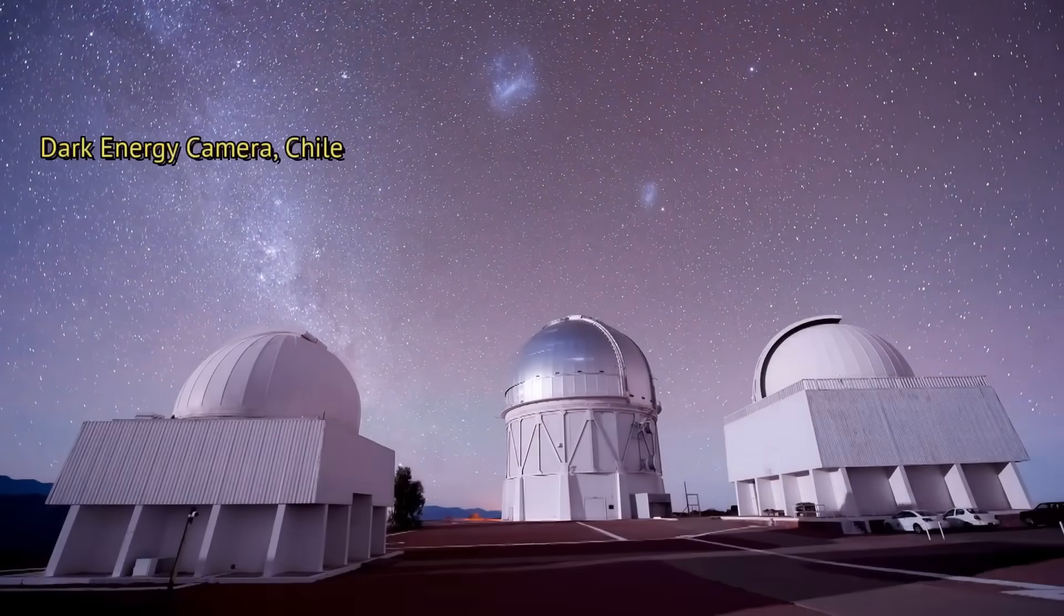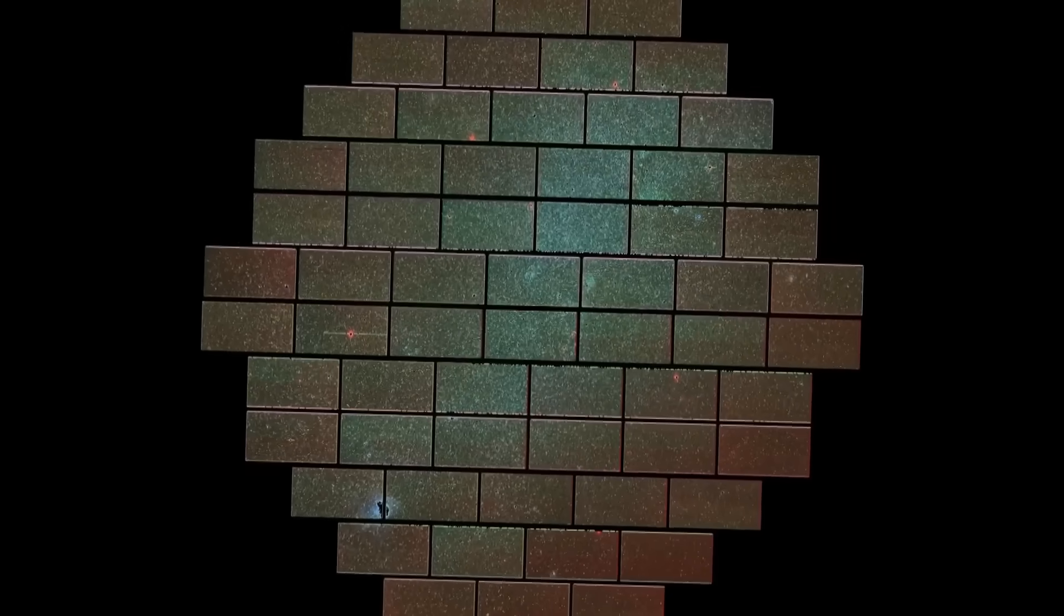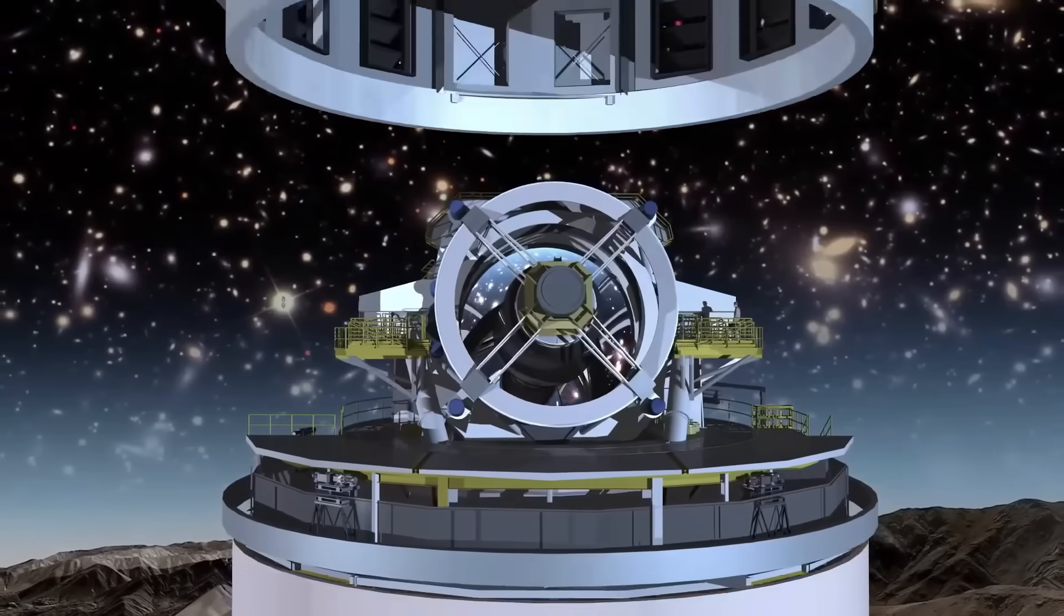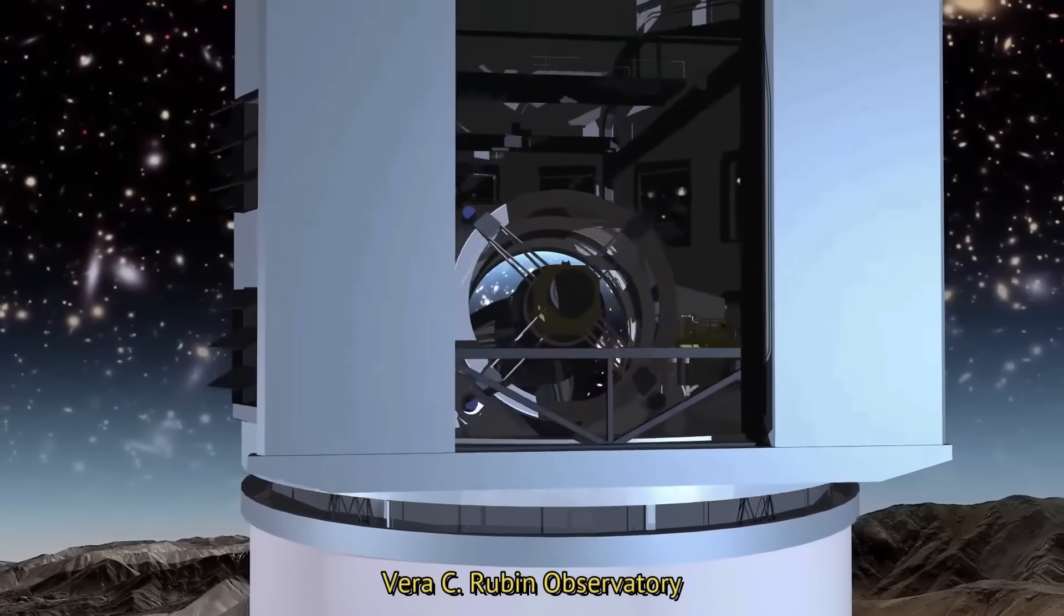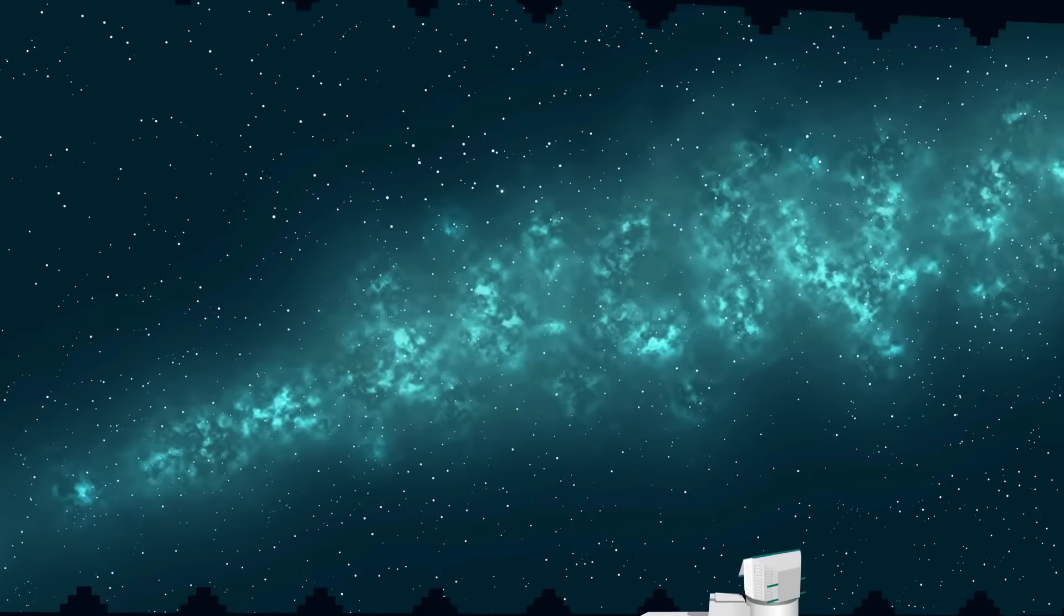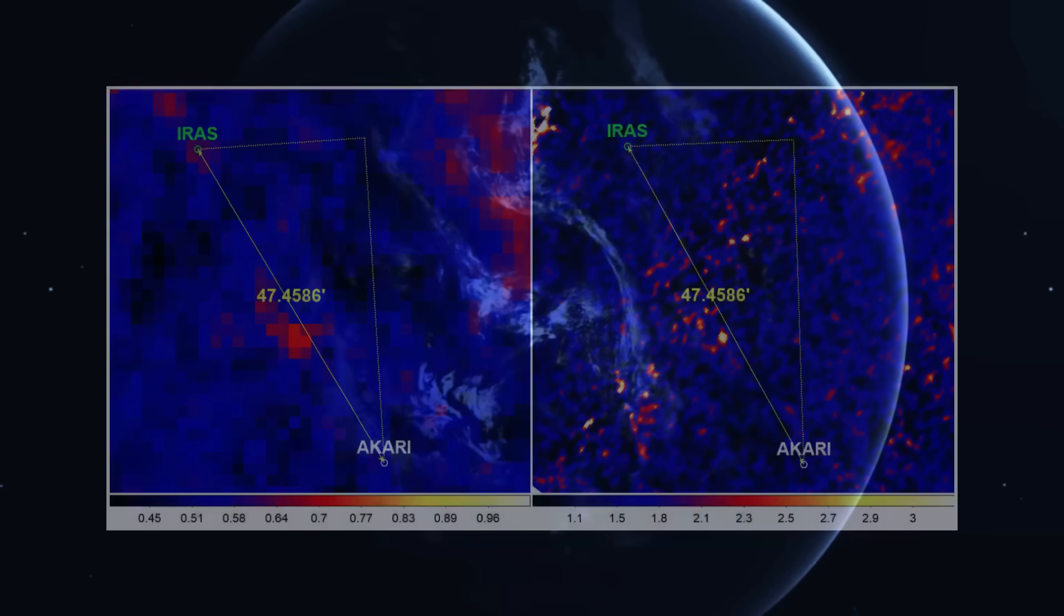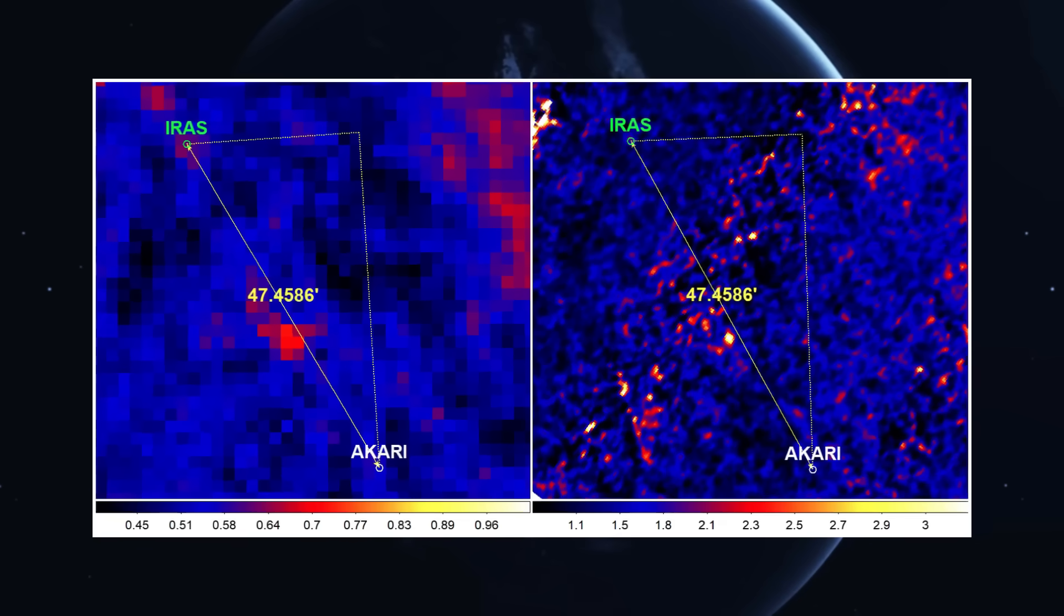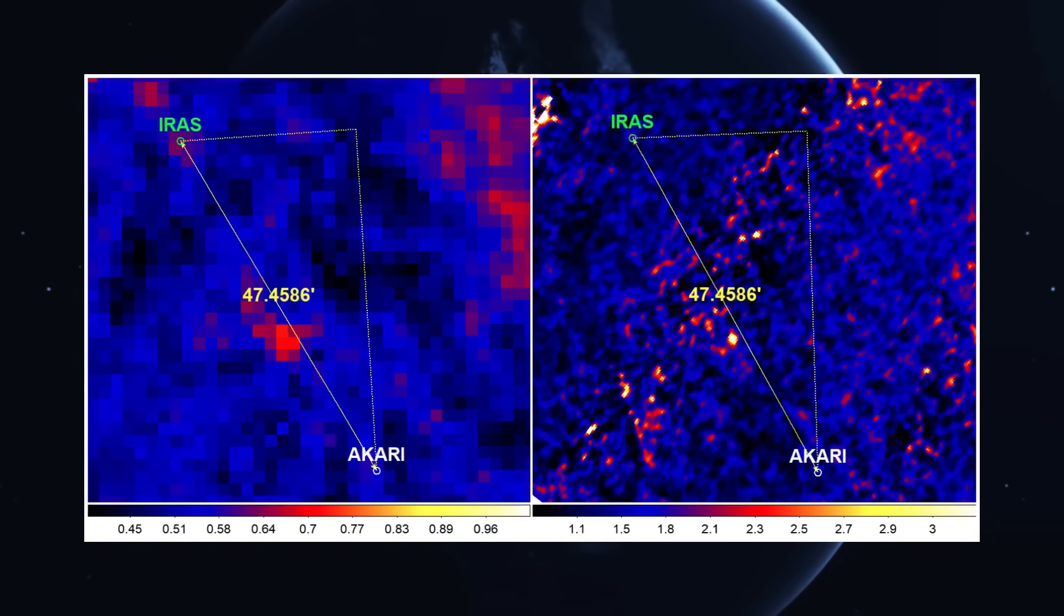The Dark Energy Camera in Chile, for instance, has a wide enough field of view to scan the right region of sky. And soon, the Vera C. Rubin Observatory will come online offering even deeper and broader surveys of the sky. So, it's possible, even likely, that if this object is real and still glowing faintly, we'll see it again.